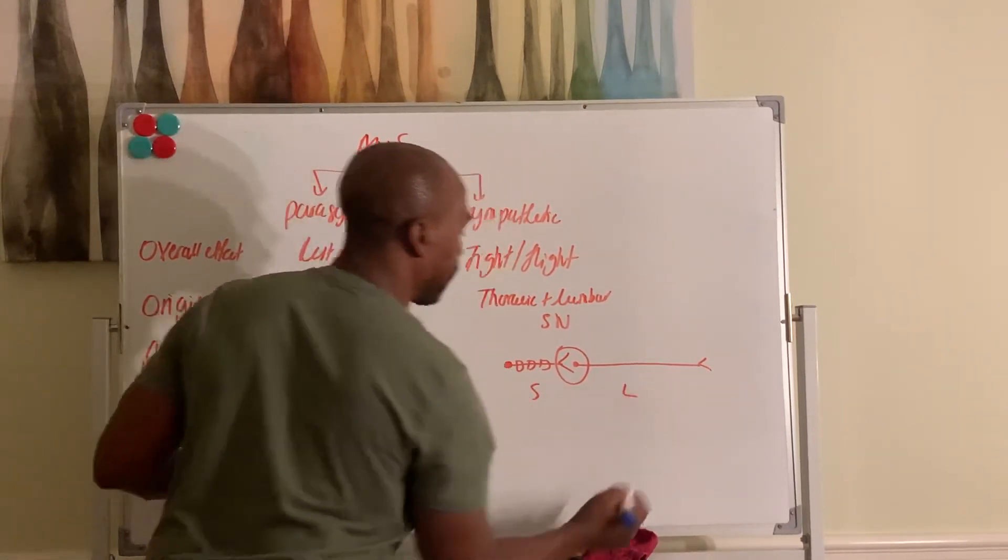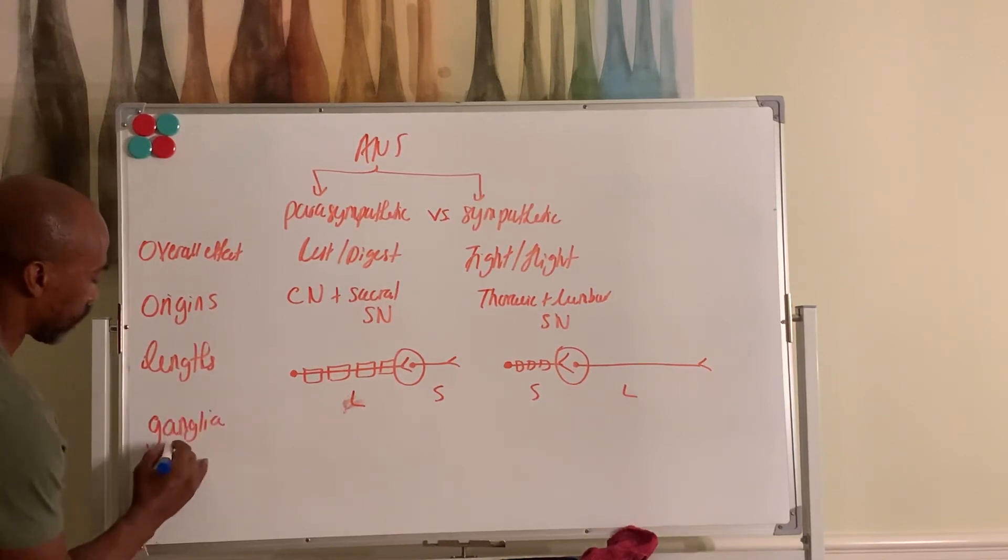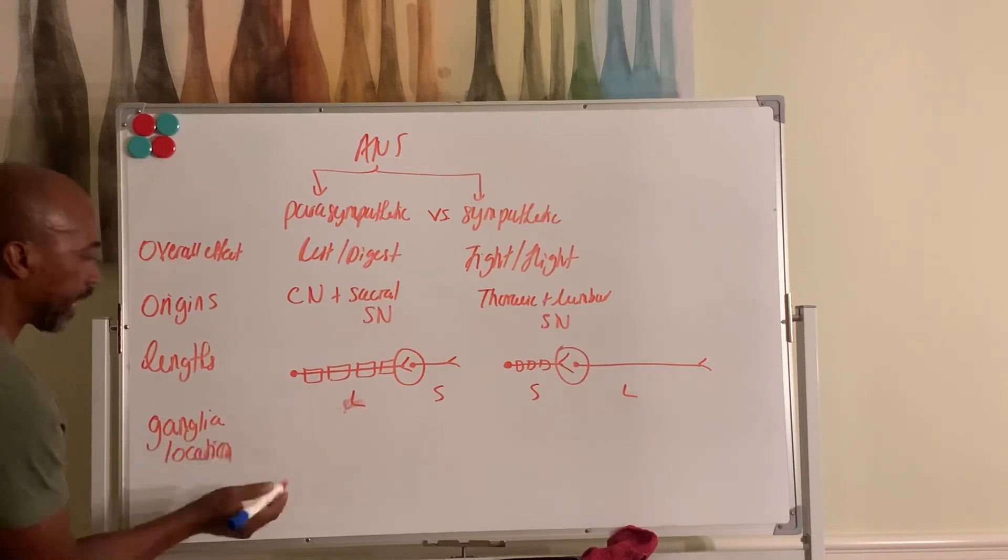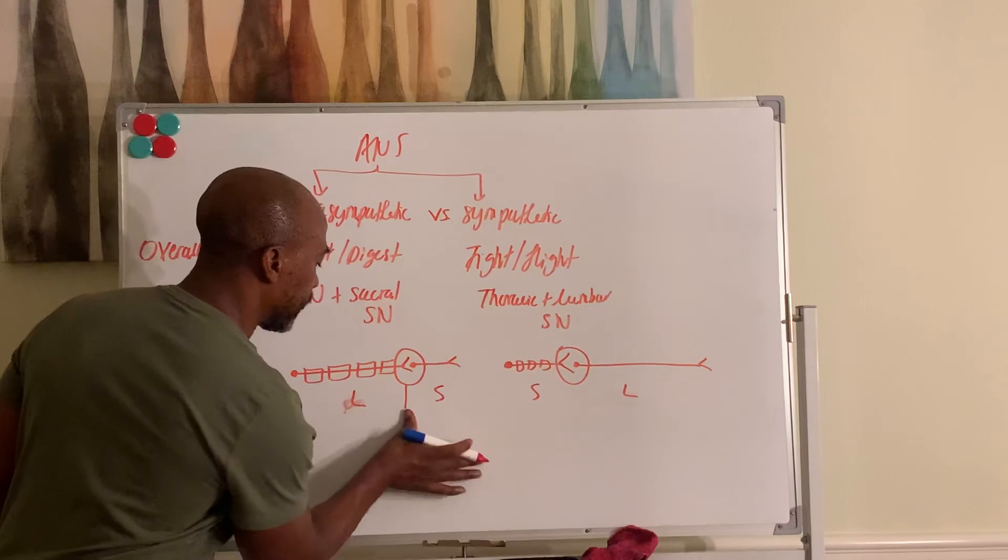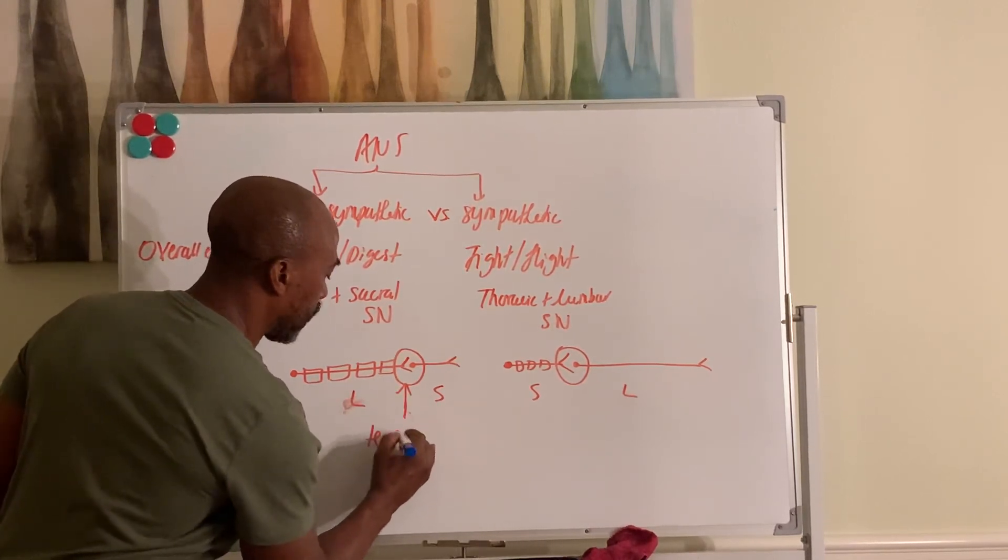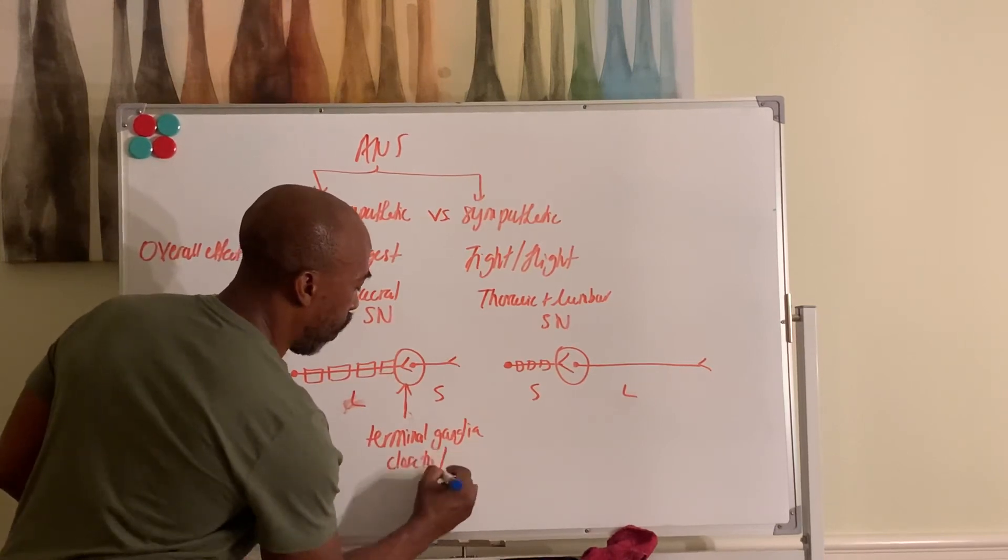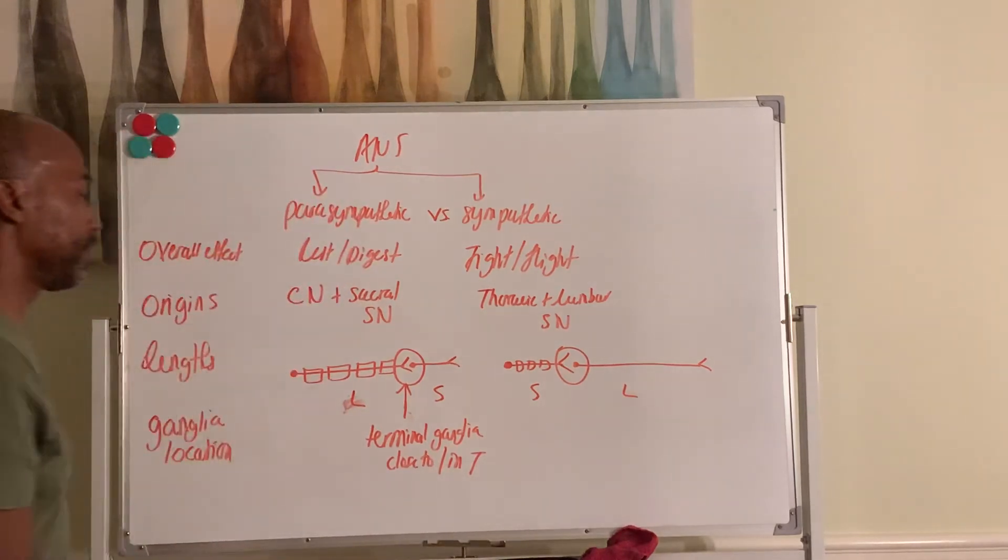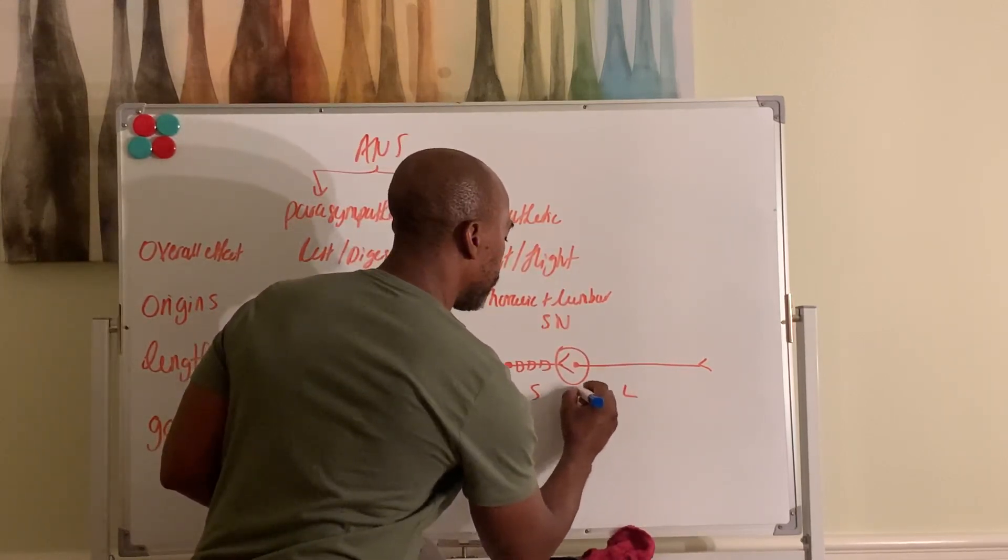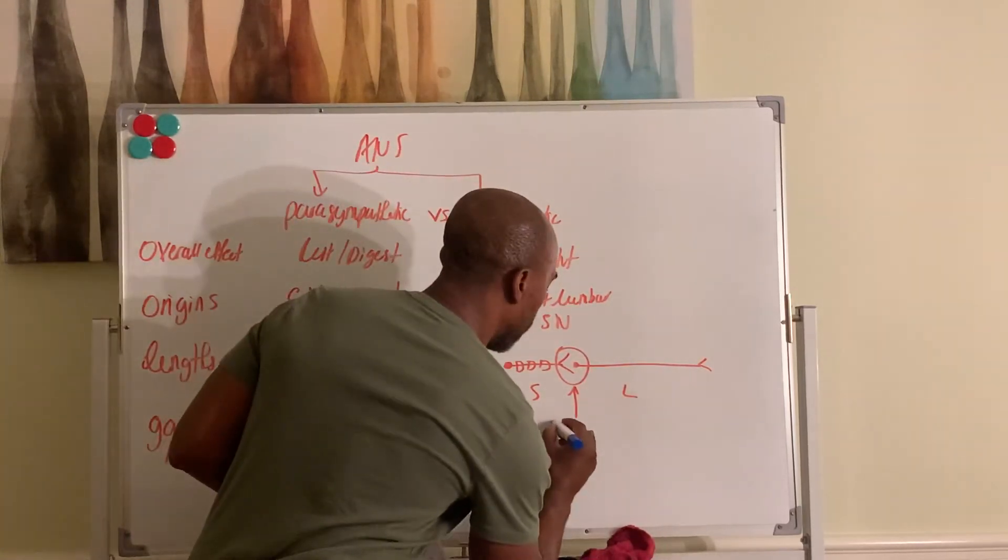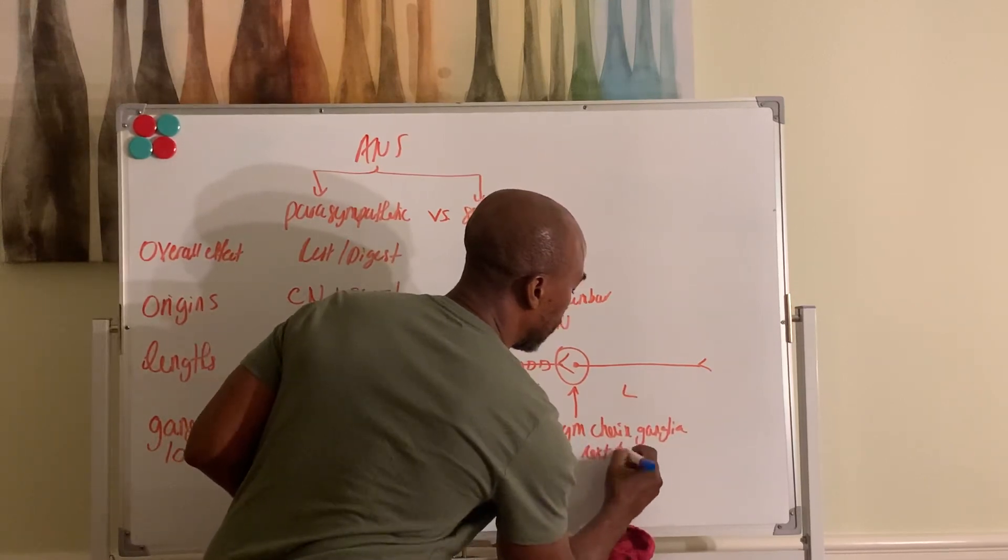And then the ganglia. Where you find the ganglia. Ganglia location. So in the para division, this ganglia, we call it a terminal ganglia. It's called terminal ganglia. And it's close to or in the target. In the sympathetic one, the ganglia forms a chain of ganglia next to the spinal cord called the sympathetic chain ganglia next to the spinal cord.